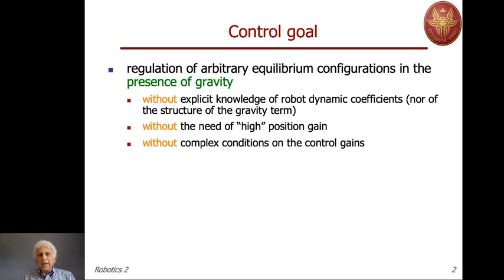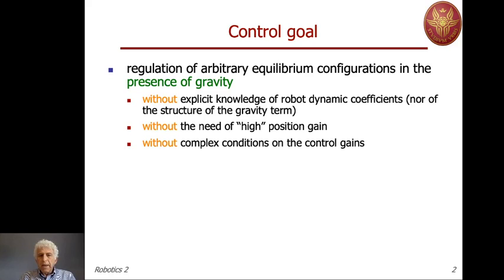Our objective will be to handle the presence of gravity, but differently from what we have seen in previous lectures. We don't use information about the model, in particular about the gravity term, neither for canceling gravity in every configuration, nor for compensating gravity at the destination. We don't make use of high positional gains, which would reduce, although not eliminate completely, the position error at steady state. And, differently from the use of PID or steady-state PID, we would like to find a control scheme that does not require special conditions on the control gain to guarantee convergence.